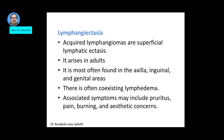The acquired variant, lymphangiectasia or acquired lymphangioma, consists of superficial lymphatic ectasias arising in adults. They are most often seen in the axilla, inguinal, and genital area. There may be coexisting lymphedema, and symptoms like pruritus, pain, and burning. There may also be a cosmetic concern due to the presence of the lesion.